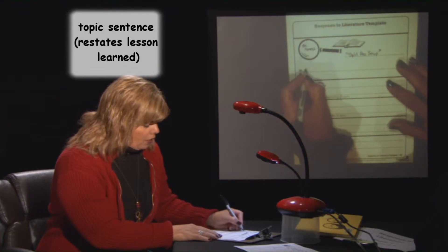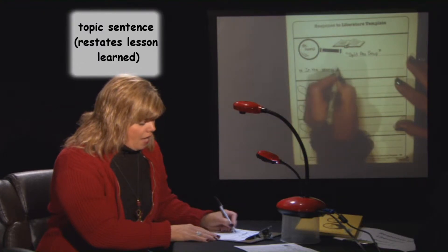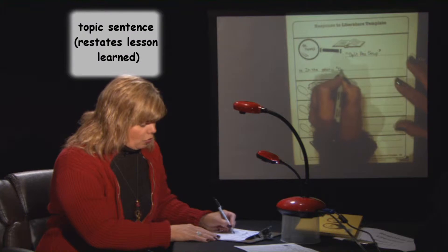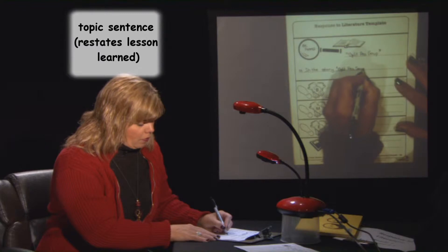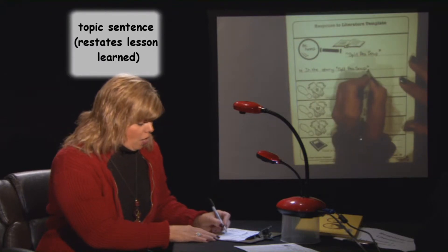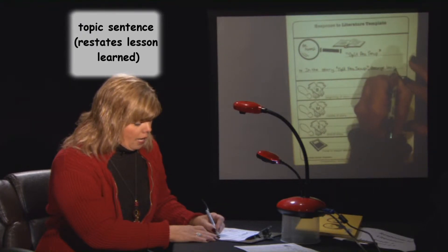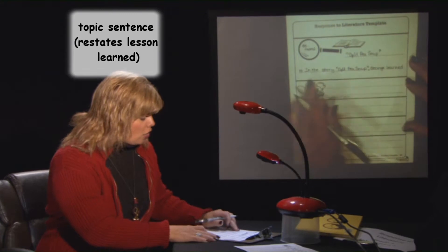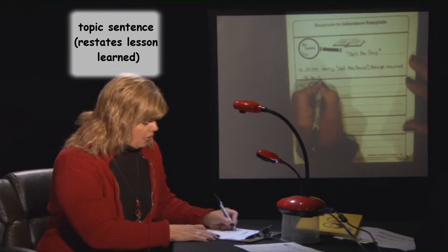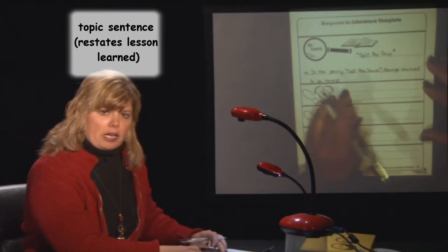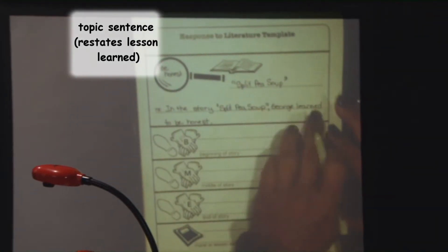We're going to write 'in the story,' then write the name of our story, Split Pea Soup, with quotation marks and a comma. George learned to be honest. We're going to go down to the bottom and write on the next line, then read it over to make sure it makes sense: In the story, 'Split Pea Soup,' George learned to be honest.